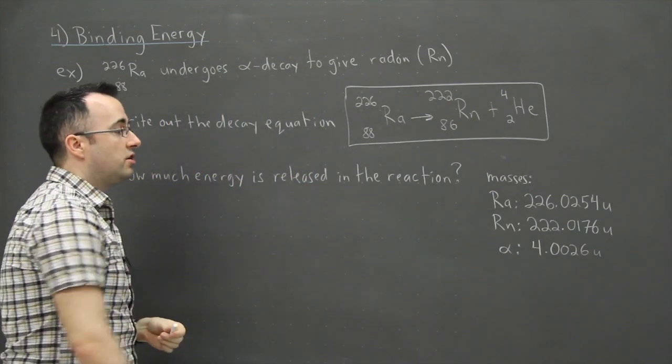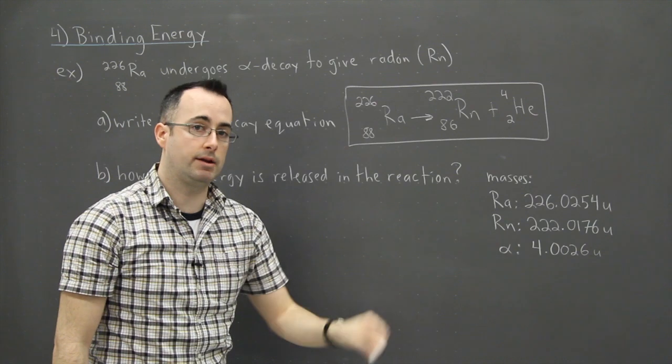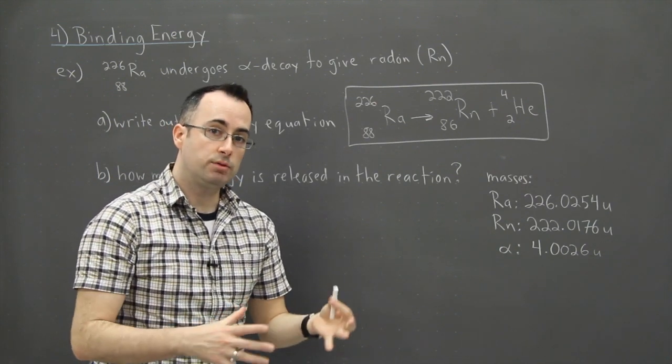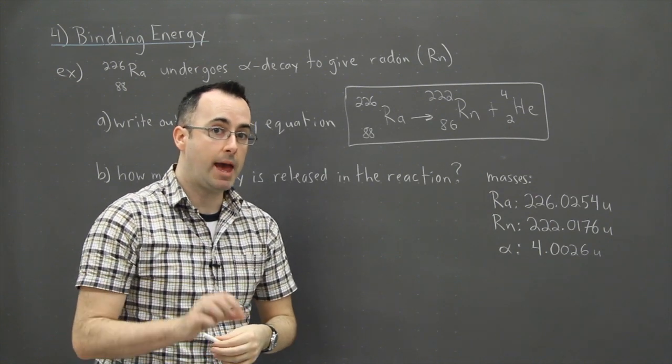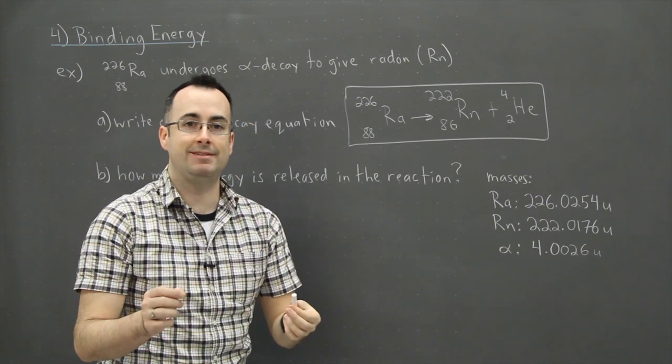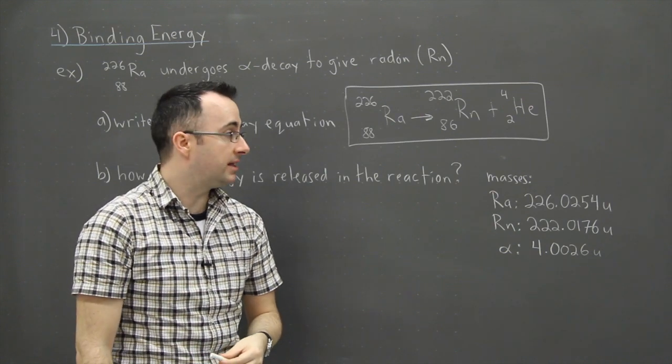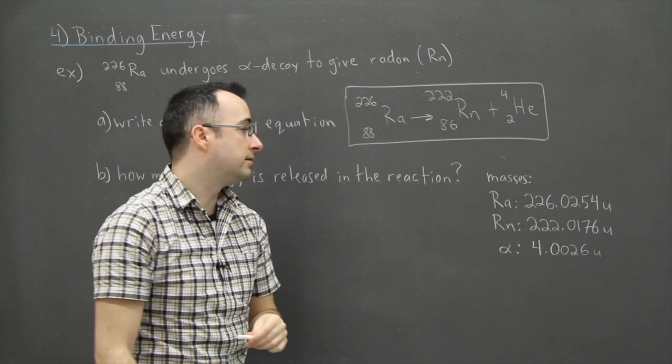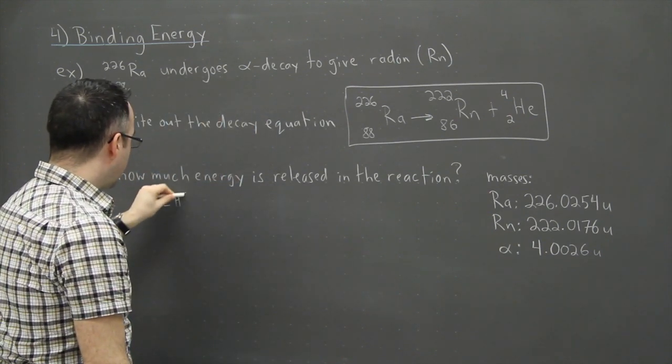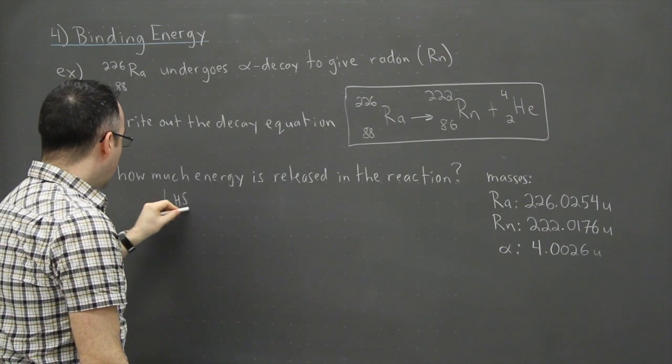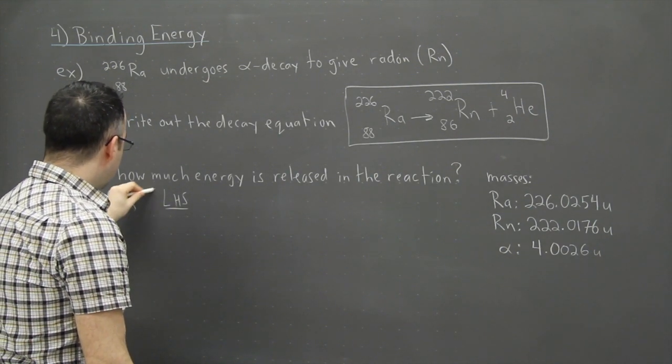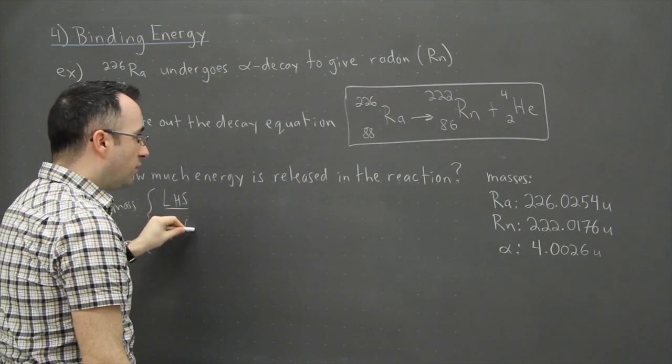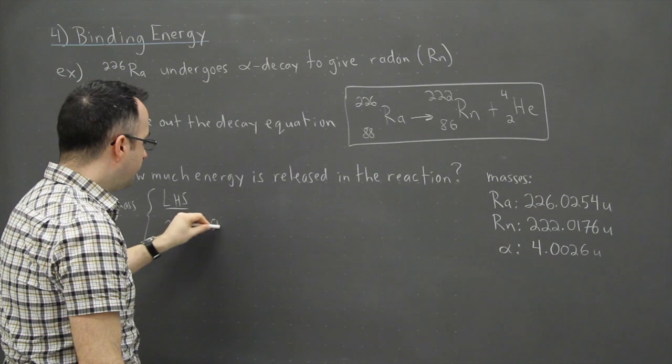So if we want to know how much energy is released, well then we need to take a look at binding energy in each reaction. So we need to take a look at E equals MC squared, and remember the M in that has to do with mass defect, which means we need to calculate the mass of the left side and the right side and we'll see that there's a difference. So let's just say LHS for left-hand side, and we'll do the mass here. So this is mass of the left-hand side, it's simple, it's just 226.0254U.